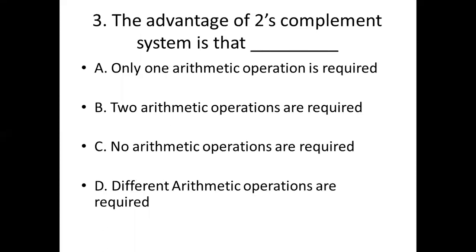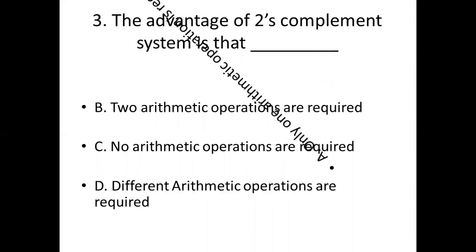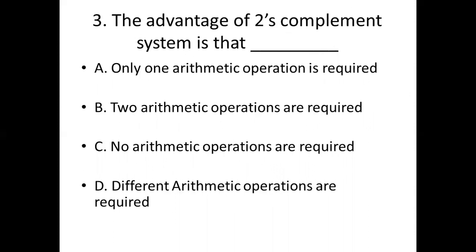Third bit. The advantage of the 2's complement system is that dash. Option A: only 1 arithmetic operation is required. Option B: 2 arithmetic operations are required. Option C: no arithmetic operations are required. Option D: different arithmetic operations are required. Answer: Option A, only 1 arithmetic operation is required.